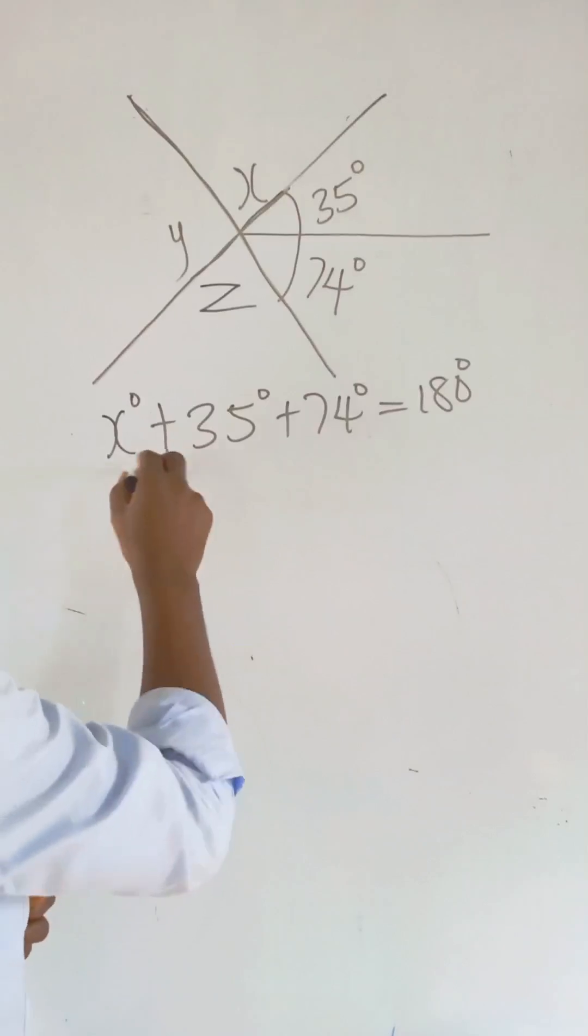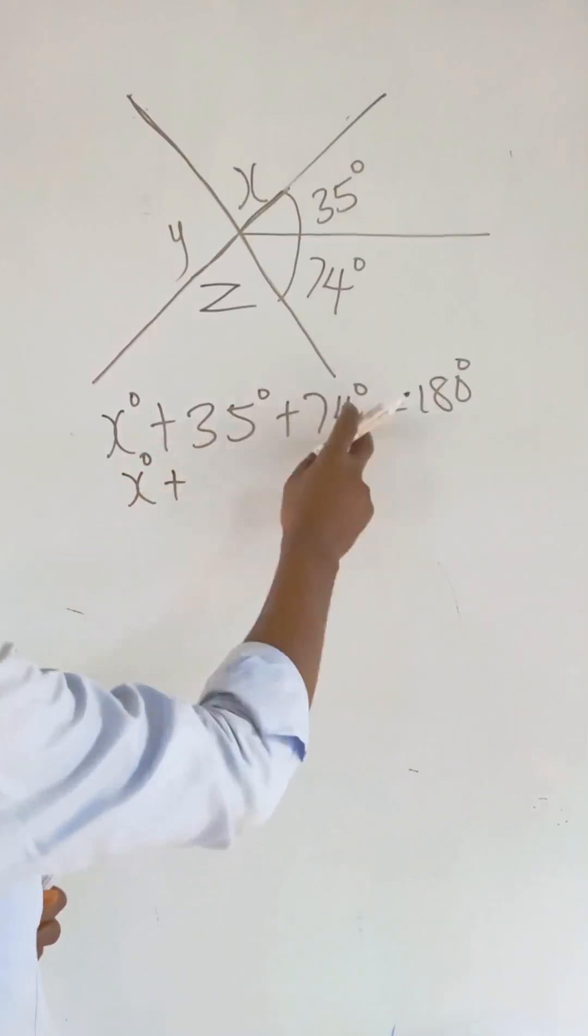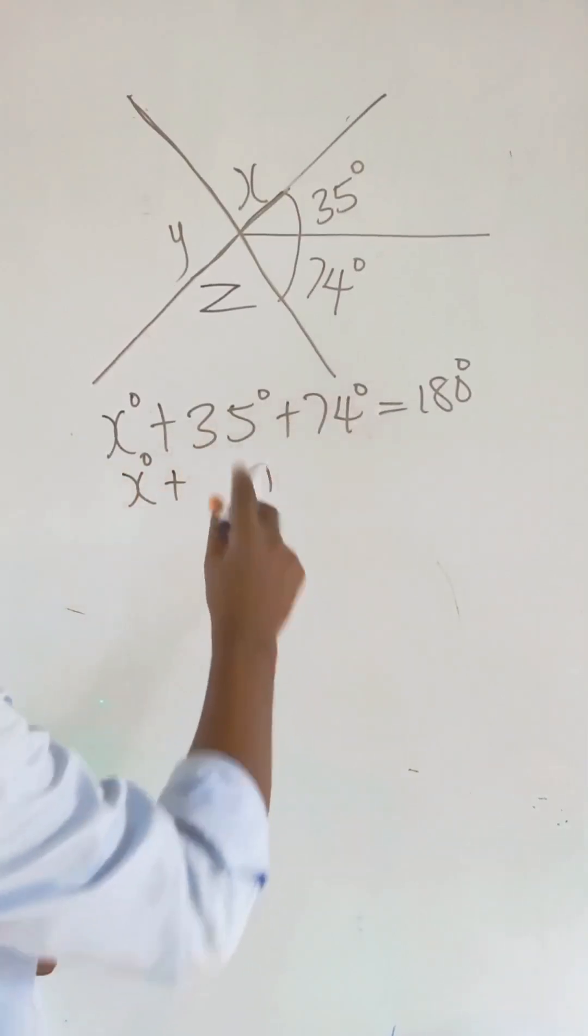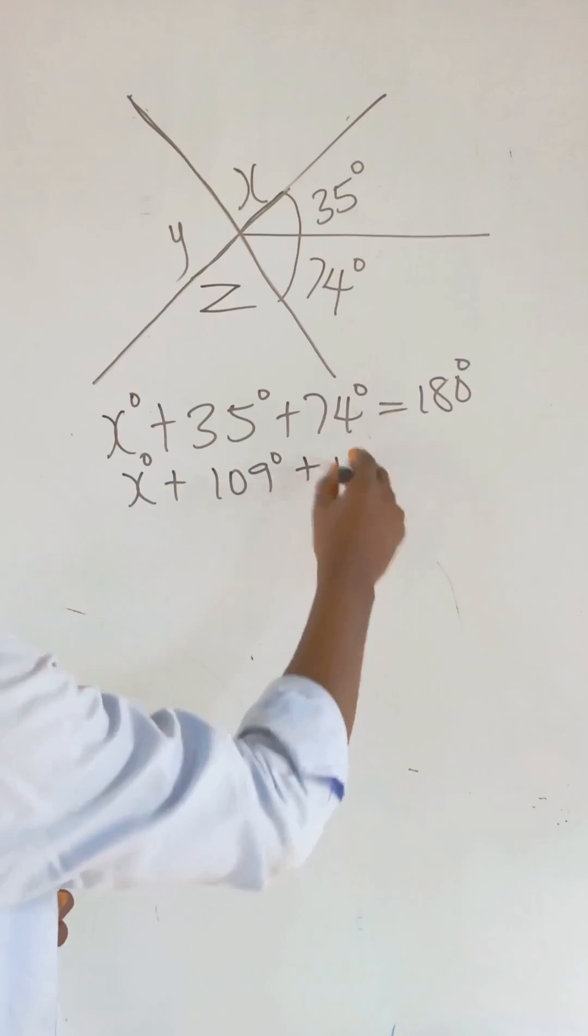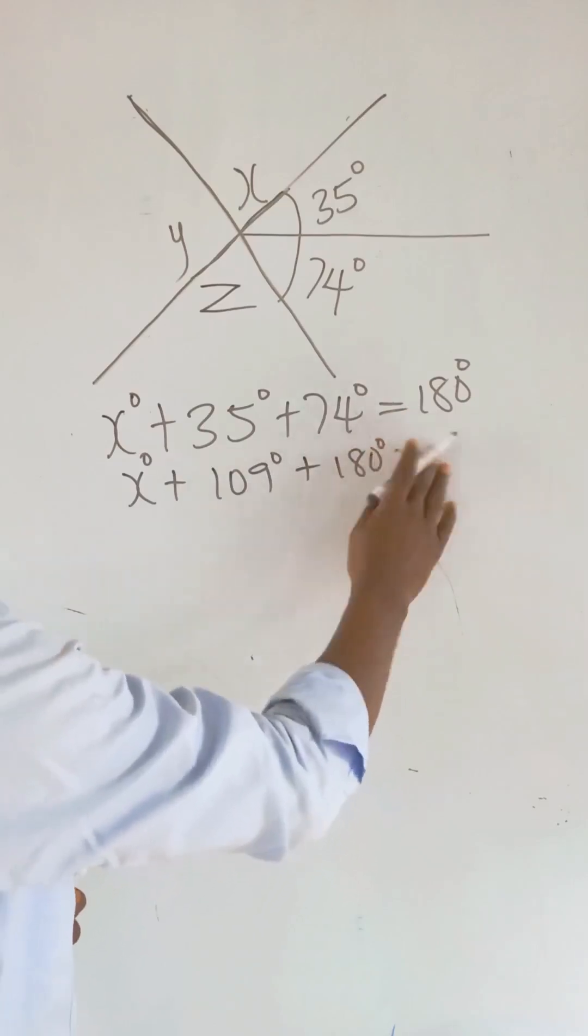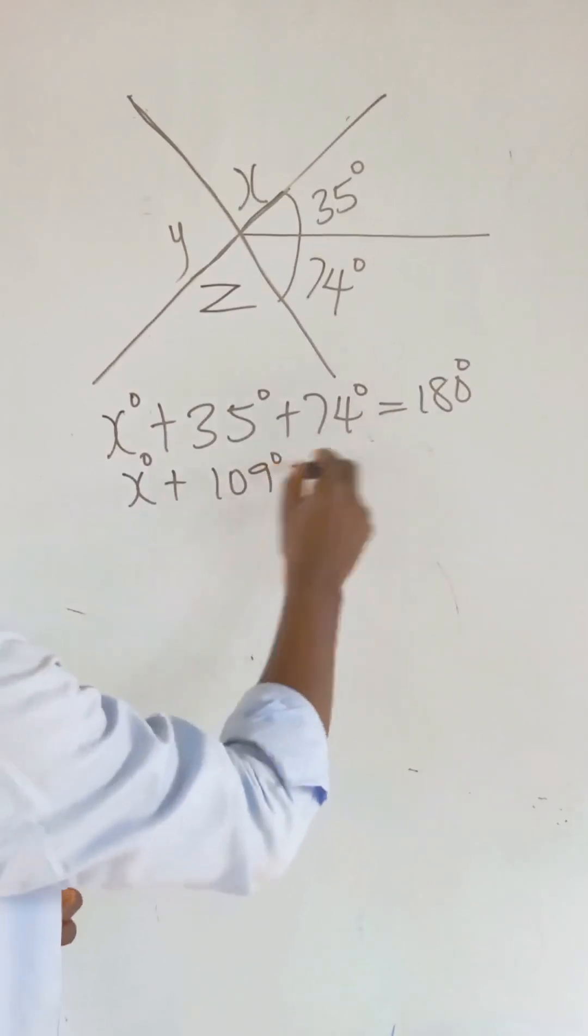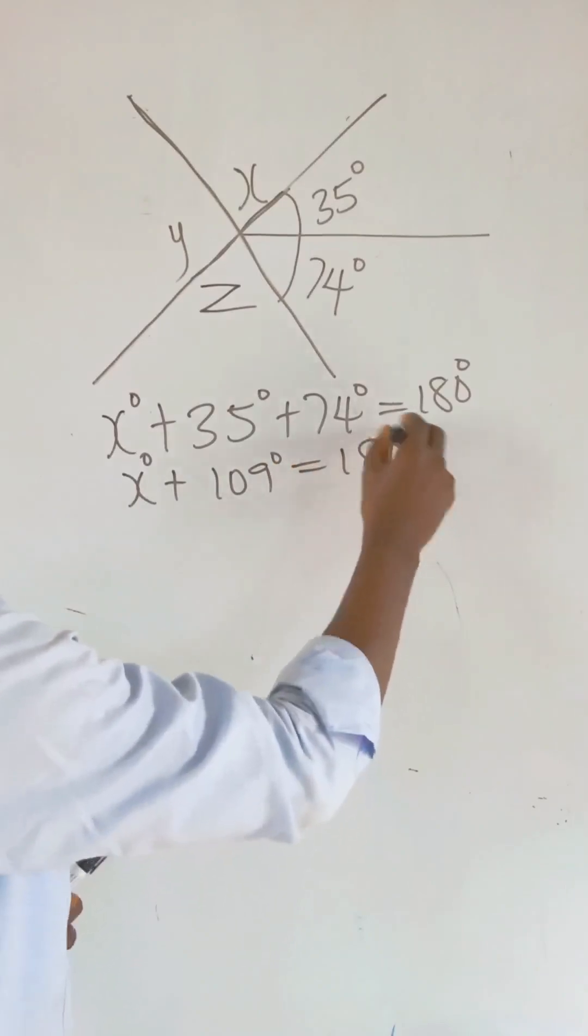So we have X plus, this plus this is 9, this plus this is 10, we have 109 degrees. So X plus 109 degrees equal to 180 degrees.